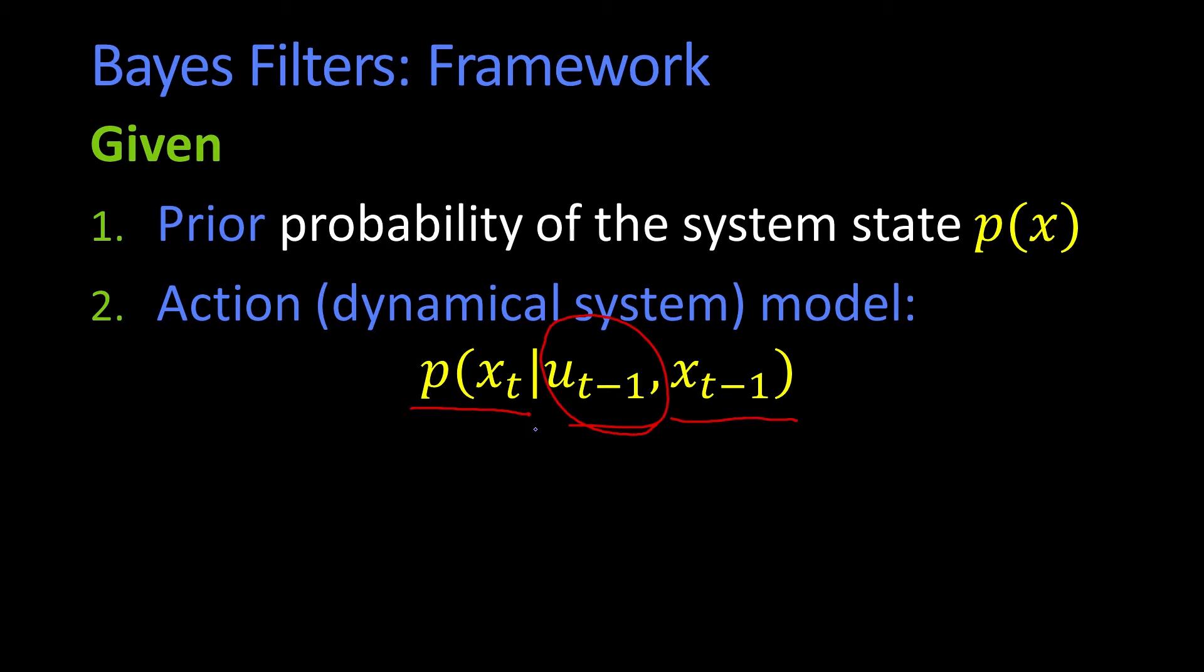By the way, you see here it says u sub t minus 1. The world is sometimes schizophrenic about whether you think of the input as happening just after the last measurement. So, it was u at t minus 1, or u happened now, and I want to estimate what the state is now. So, whether it's u t or u t minus 1, it's whatever u you're going to add on to x t minus 1 in order to make your prediction about x t. All right? So, we're given these two things.